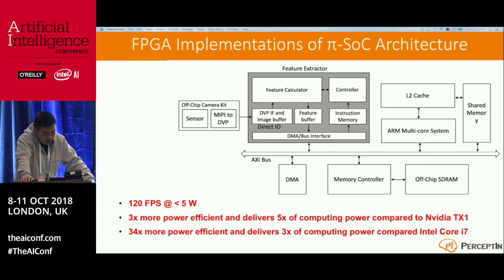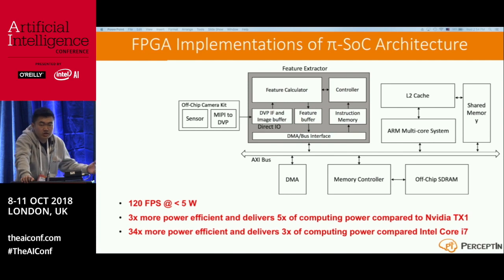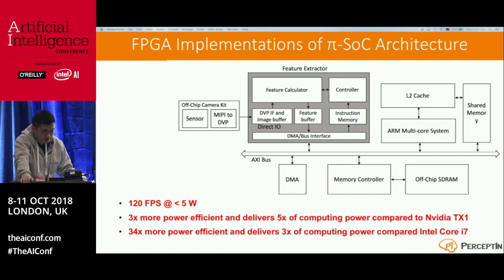Compared to a NVIDIA TX1, our FPGA solution is 3x more power efficient and delivers 5x more computing performance. Compared to an Intel Core i7 server-level chip, we achieved 34x more power efficiency and a 3x reduction in power consumption. That's a very amazing result. If you have an autonomous vehicle going at 60 miles per hour, this chip would be sufficient, and it costs less than $300.